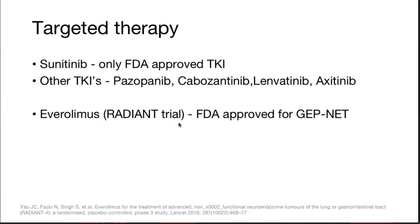For targeted therapies — the only FDA-approved TKI for gastroenteropancreatic neuroendocrine tumors is sunitinib. Other agents including pazopanib, cabozantinib, lenvatinib, and axitinib can also be used. Based on the RADIANT trial, everolimus can also be used.